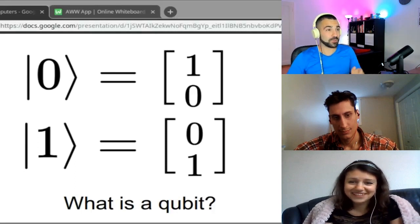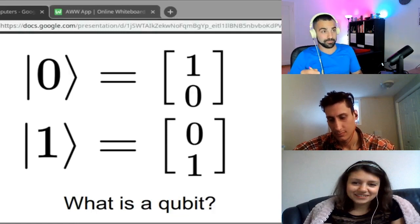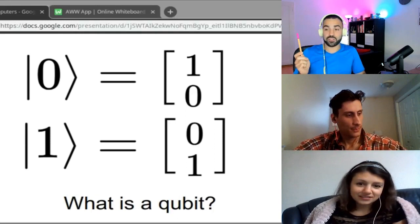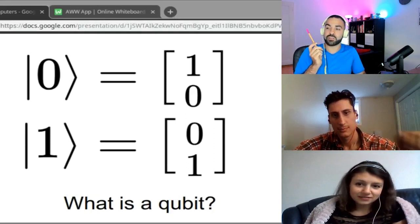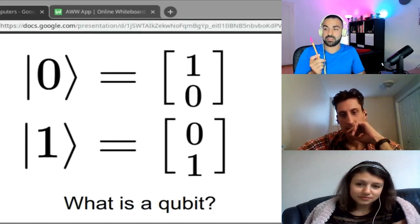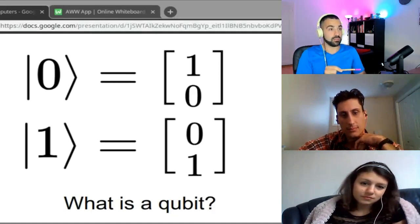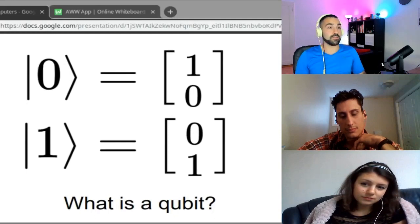But for the people who want to imagine it, imagine that the equivalent of a 0 in classical computers is this array where the index 0 has 1 and the index 1 has 0, and that's the 0 qubit. The 1 qubit is an array where the 0 element is 0 and the first element is 1.